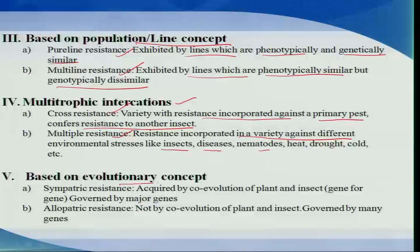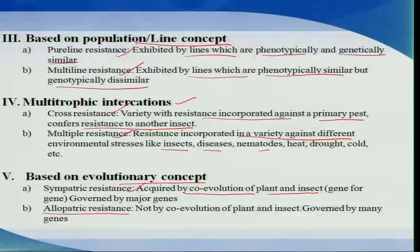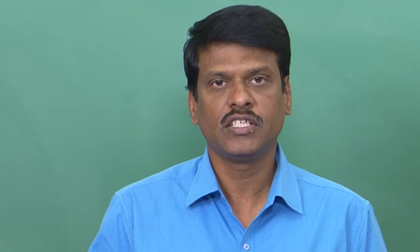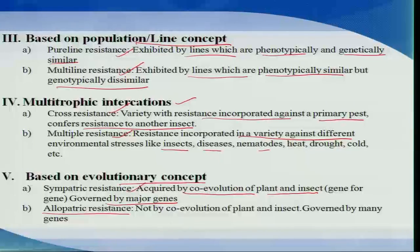Based on the evolutionary concept, we can classify resistance as sympatric resistance or allopatric resistance. In sympatric resistance, there is a co-evolution of plant and insect governed by major genes: the insect attacks the plant, the plant develops a defense mechanism, the insect develops a counter-mechanism, and this arms race continues. In allopatric resistance, there is no such co-evolution; it is governed by many other genes.